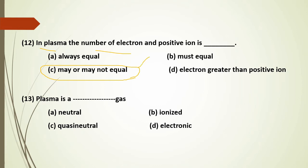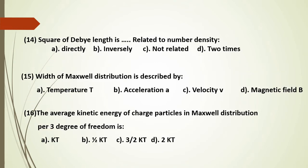Plasma is a quasi-neutral gas. It is not simply a neutral or ionized gas, but specifically a quasi-neutral gas. The answer is quasi-neutral.